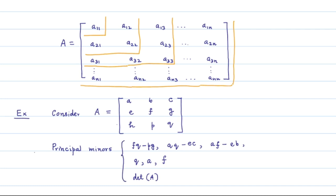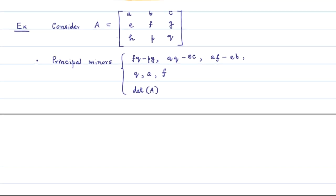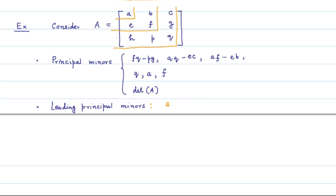The leading principal minors of a matrix A are the determinants of the top-left 1×1, 2×2, 3×3, ..., and full n×n submatrices. For a 3×3 matrix A with entries A, B, C, B, D, E, C, E, F, the leading principal minors are: A, AF−BE, and det(A).